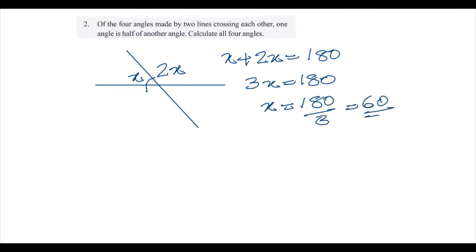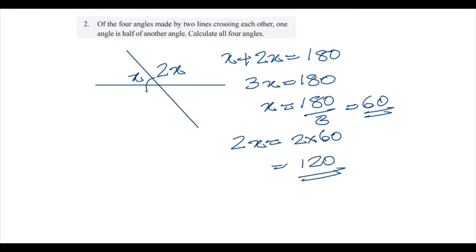The other angle 2x equals 2 times 60, which gives 120 degrees. We can draw this in the diagram: one angle is 60 degrees, the opposite is also 60 degrees, and the other pair of opposite angles are both 120 degrees.